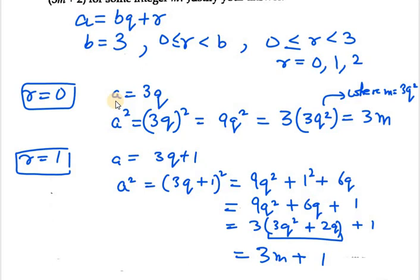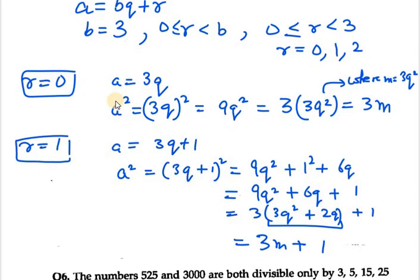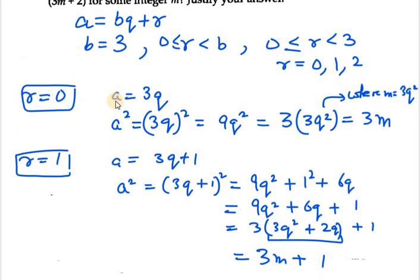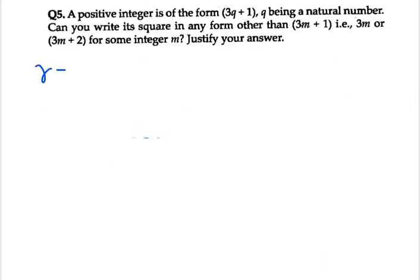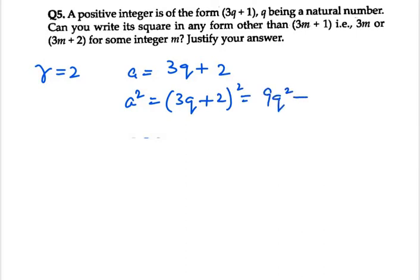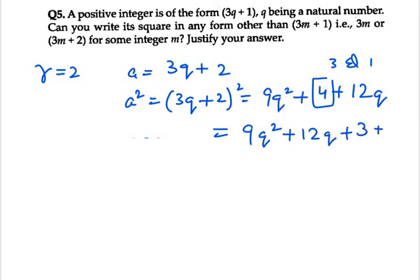Now we are going to check for r equals 2. a becomes 3q plus 2. Now we need to take square of it. So 3q plus 2 whole square equals 9q square, 2 square is 4, plus 2 into 3q into 2, that will be 12q. Now I will bring 12q ahead and will split 4 as 3 and 1, so plus 12q plus 3 plus 1.